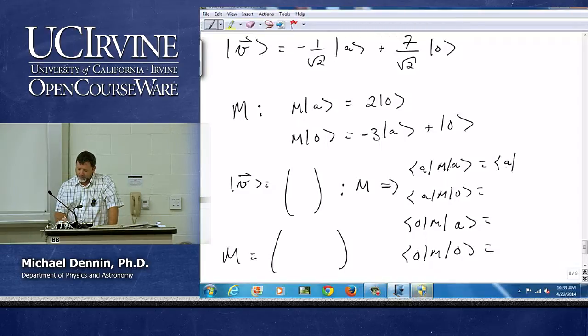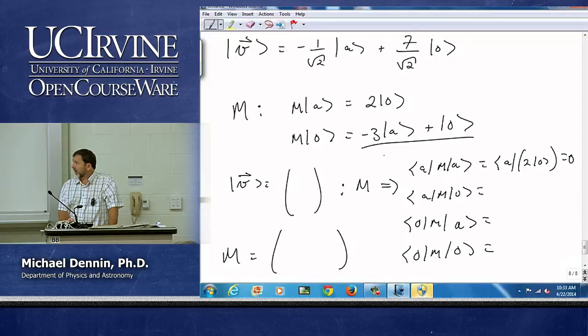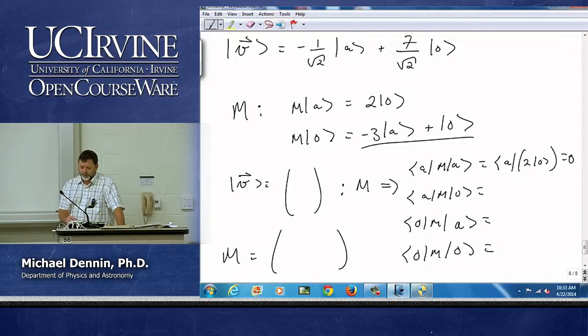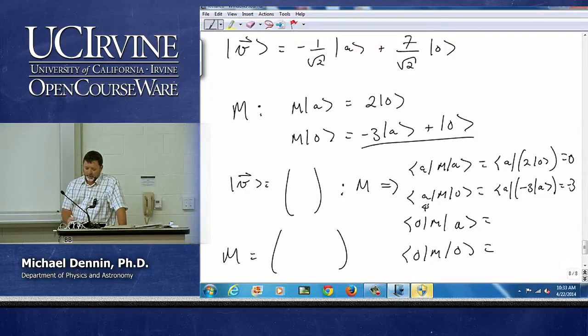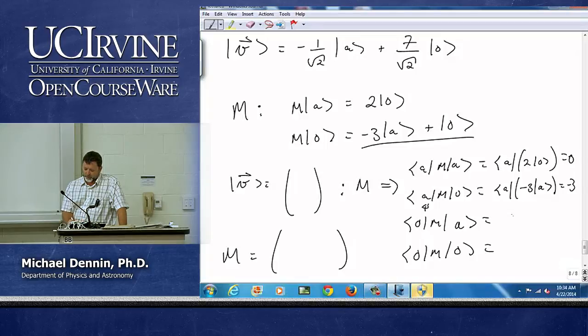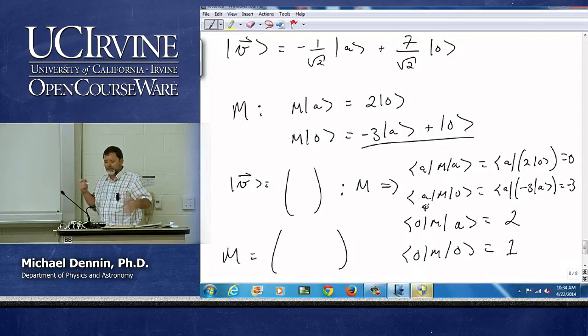I'll do the first one. So M times A, we know, is 2 O, but A times O is 0. M times O is going to be the minus 3 A plus O. But what is the only one that's going to survive multiplication by A? Is the A term. So we really only need to keep track of that. So that's minus 3. M times A is 2 O. O and O is 1, so that's 2. M times O is the minus 3 A plus O. We need the O one, which is 1.